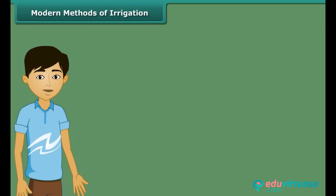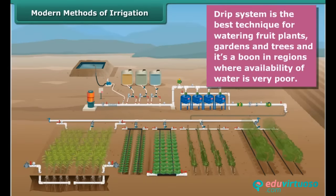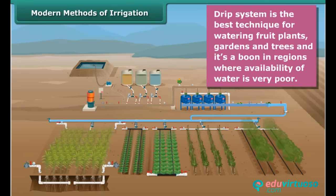Let us now know the modern methods of irrigation. A sprinkler system is most useful on uneven land where sufficient water is not available. In this system, perpendicular pipes having rotating nozzles on top are joined to the main pipeline at regular intervals. When water flows through the main pipe under pressure with the help of a pump, it escapes from the rotating nozzles and gets sprinkled on the crop as if it is raining. Next is a drip system, where water falls drop by drop just at the position of the root. It is the best technique for watering fruit plants, gardens and trees, and is a boon in regions where water availability is very poor.